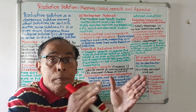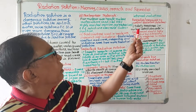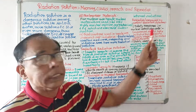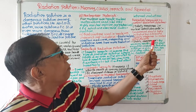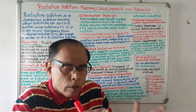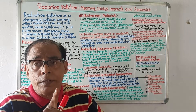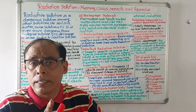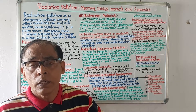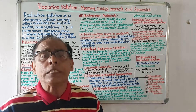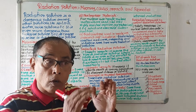Now I will discuss what will be the remedies — how radiation pollution will be checked. Number one: safety measures in nuclear establishments. Governments should take initiative for adequate safety measures in nuclear establishments. If adequate safety measures are taken in nuclear reactors, there will not be leakages, and by this radiation pollution will be controlled.